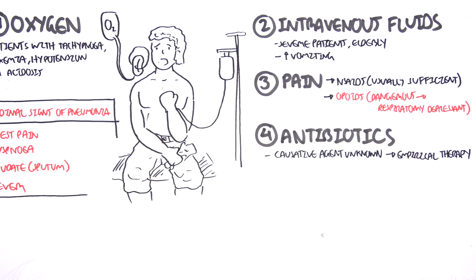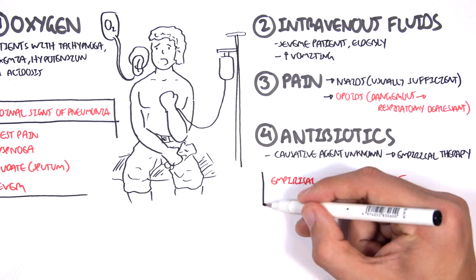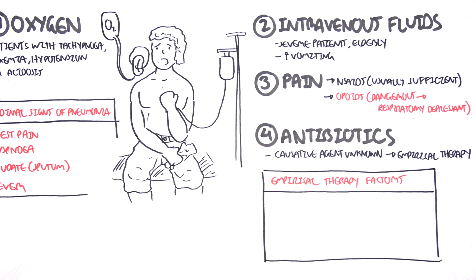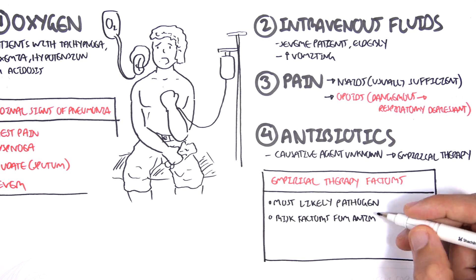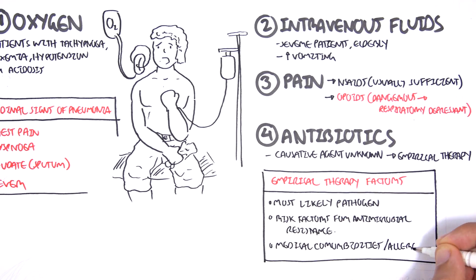When performing empirical therapy, it's important to look at a few factors. These are what is the most likely pathogen, the risk for antimicrobial resistance, and if the person has any medical comorbidities or allergies.